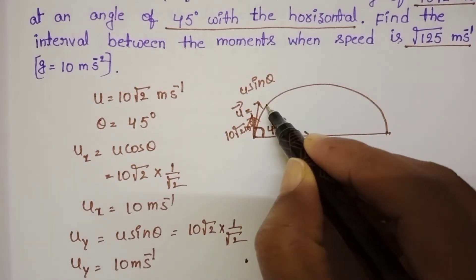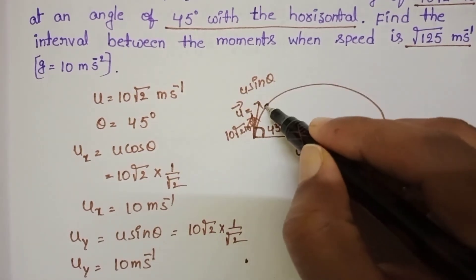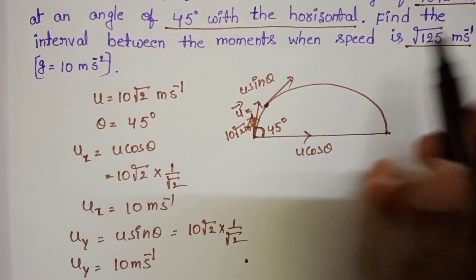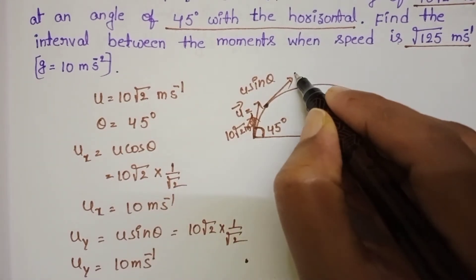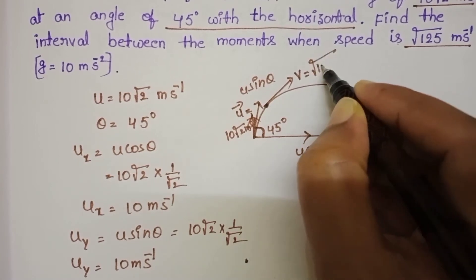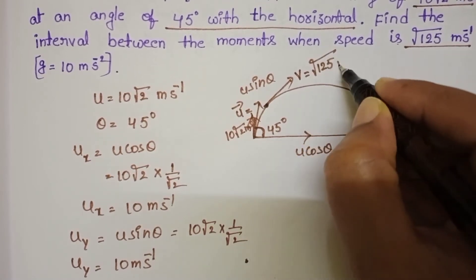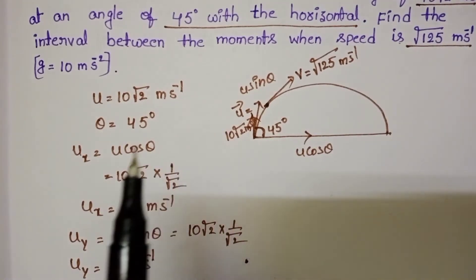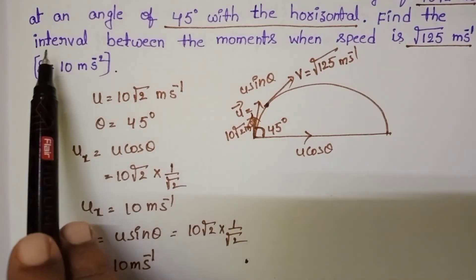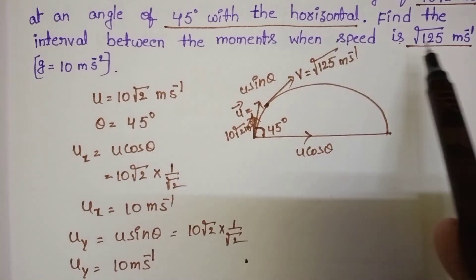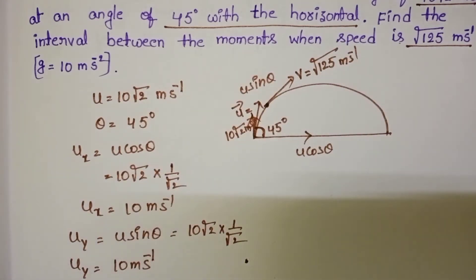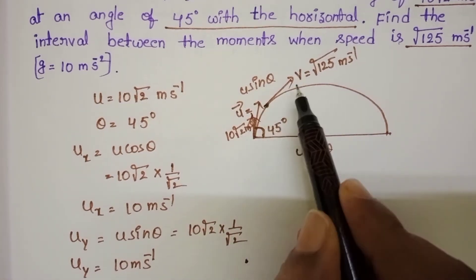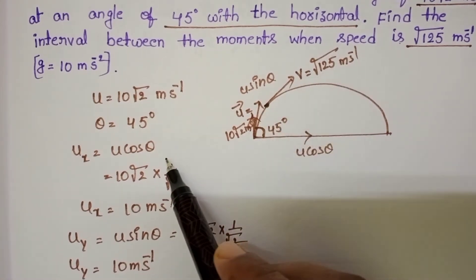After a certain instant, the velocity of the particle changes to √125 meter per second. So at this point, velocity v = √125 meter per second. We have to find out the time interval between the two moments when the speed is √125 meter per second.